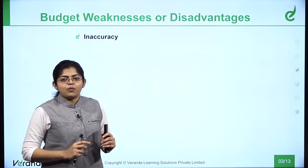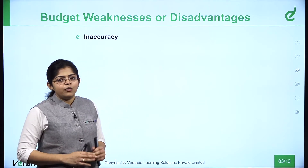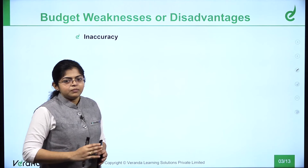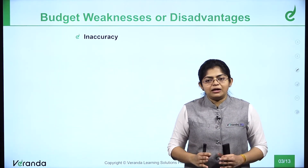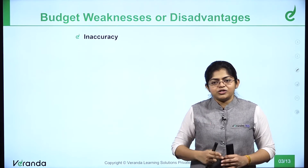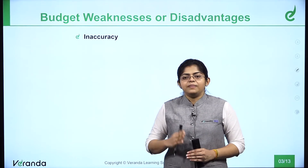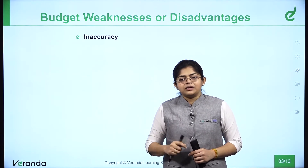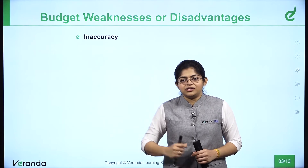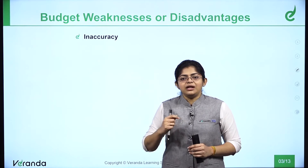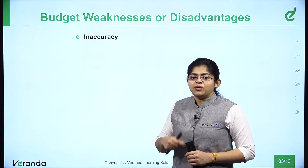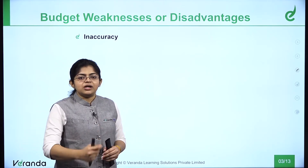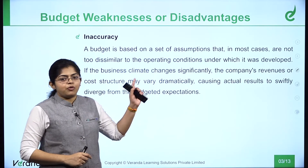First are budget weaknesses or disadvantages. The first one is inaccuracy — specifically, data inaccuracy while formulating the budget. For example, if I need to plan for a trip to Manali, I will plan based on facts like costs, conditions, and COVID status there. Similarly, in government budgeting, we need data from all government departments, which collect data from ground-level implementation agencies. As a lot of data accumulates, it mostly leads to inaccuracy. Inaccurate data leads to inaccurate planning, which results in an inaccurate budget.